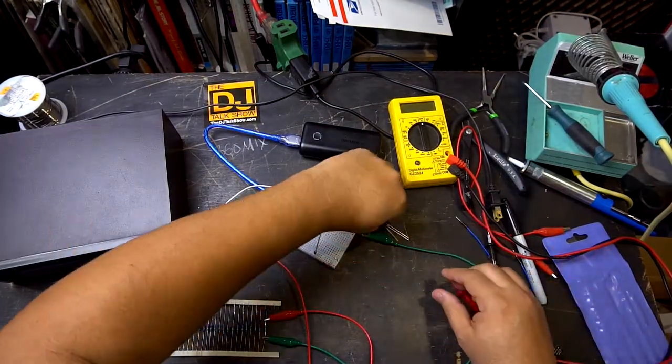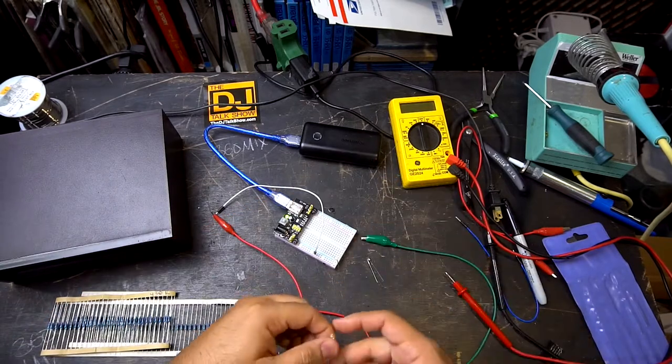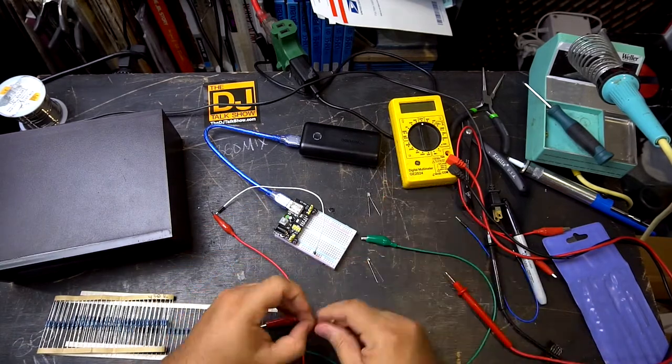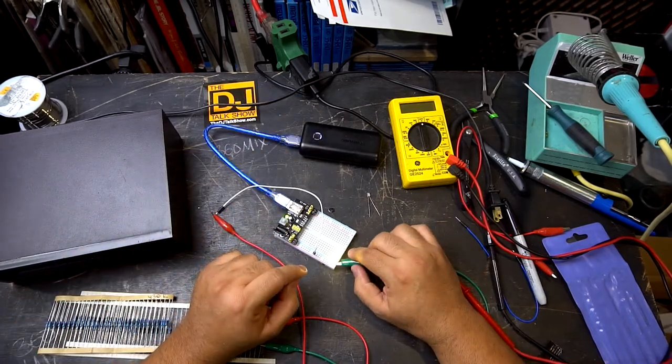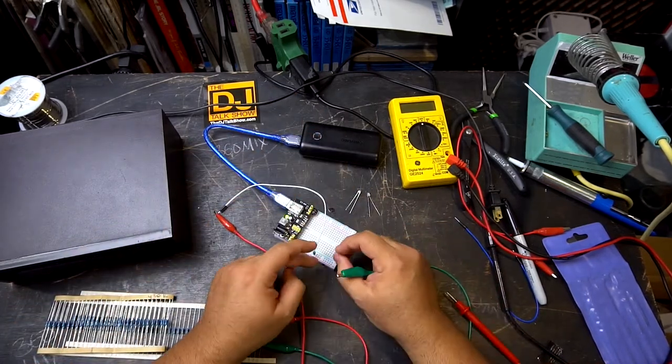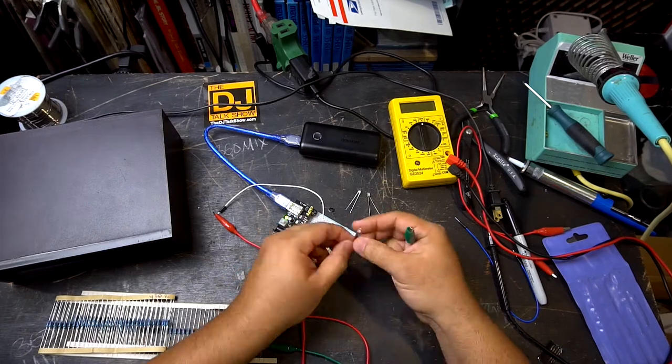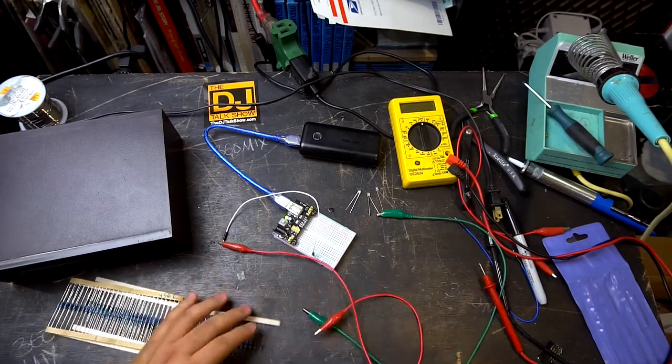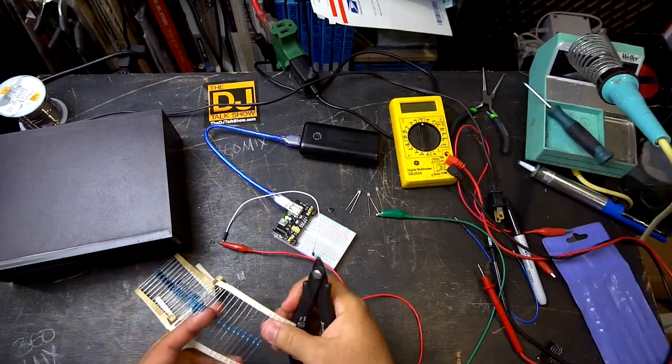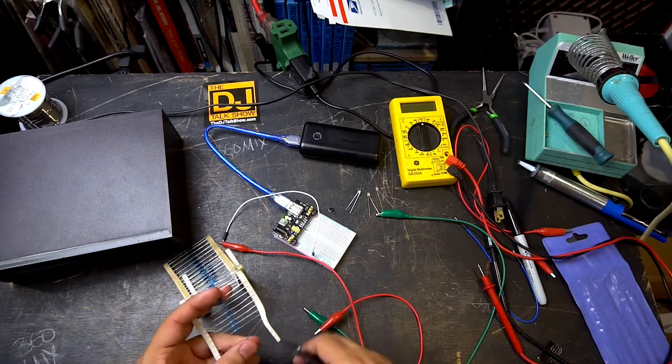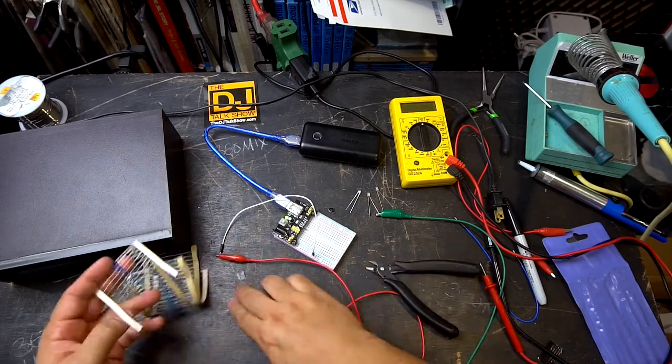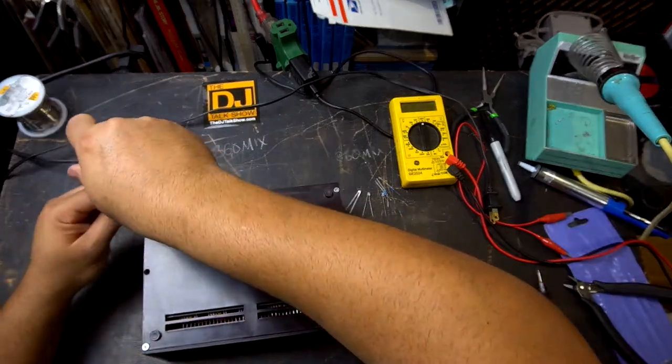So what I'm going to do now is test all of the LEDs just to make sure they work. The ones we're going to use—we're going to need three of them—and I'm going to spare you me testing each of the LEDs, but they are working. And we're going to cut three 270 to 300 ohm resistors and we're going to use three of those as well.